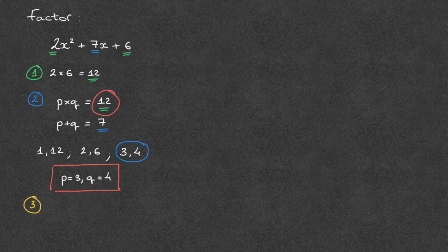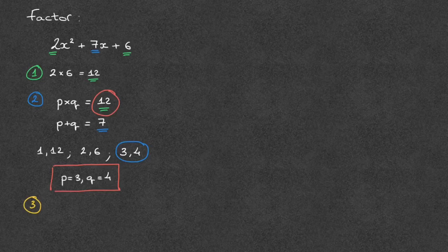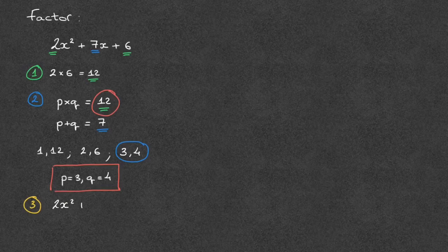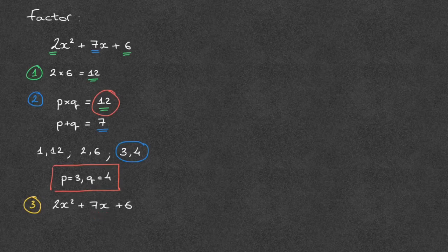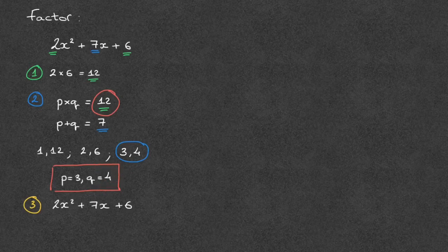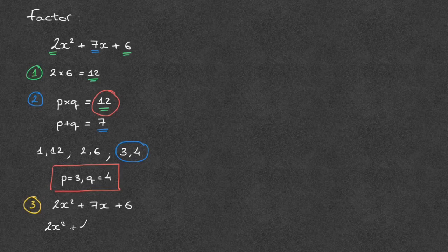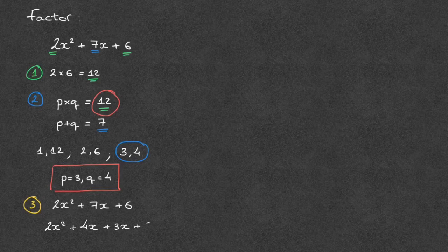And in this step, we actually split the middle term. Here's what that means. Our quadratic was 2x squared plus 7x plus 6. And the middle term is 7x. And the idea behind splitting the middle term is to use the two numbers we just found in step 2 to rewrite this quadratic as 2x squared plus 4x plus 3x plus 6.